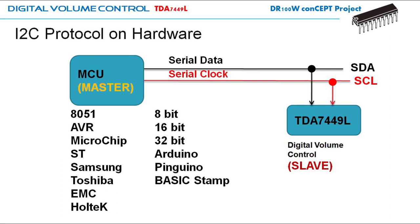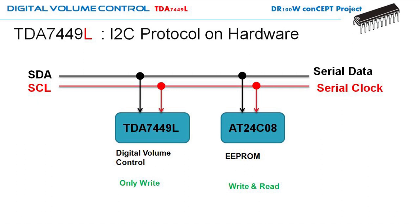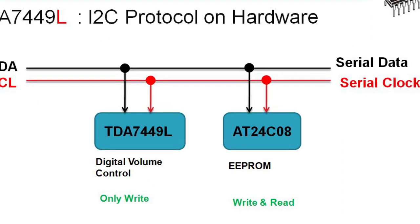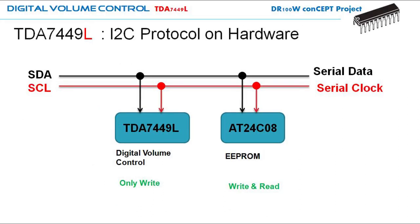The micro is called the master and the TDA7449L is the slave device. In our DR100 concept project, we have two slave devices: the first is the TDA7449L, and the second is the EEPROM D802408 — an electrically erasable programmable read-only memory for storing data like the last volume setting.